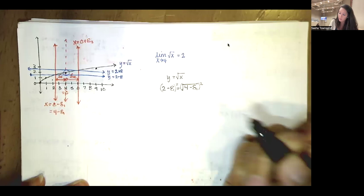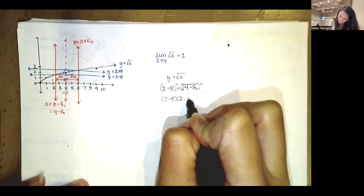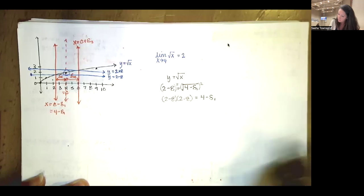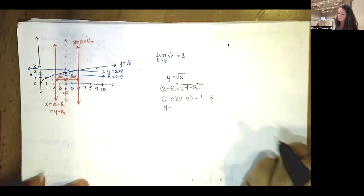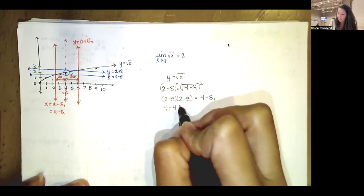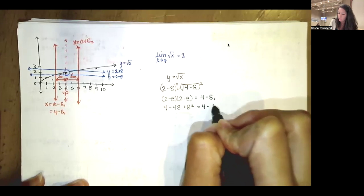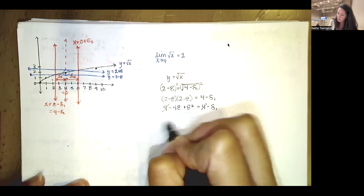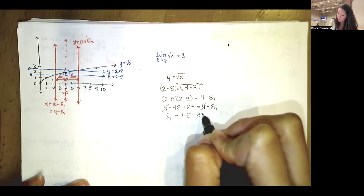With L equal to two and c equal to four, we replace x with 4 minus delta one and y with 2 minus epsilon, then solve for delta one. To remove the square root, we square both sides. Expanding using FOIL: first times first is 4, outer plus inner gives negative 4 epsilon, last times last is epsilon squared. Subtracting 4 from both sides and multiplying by negative one, delta one equals 4 epsilon minus epsilon squared.